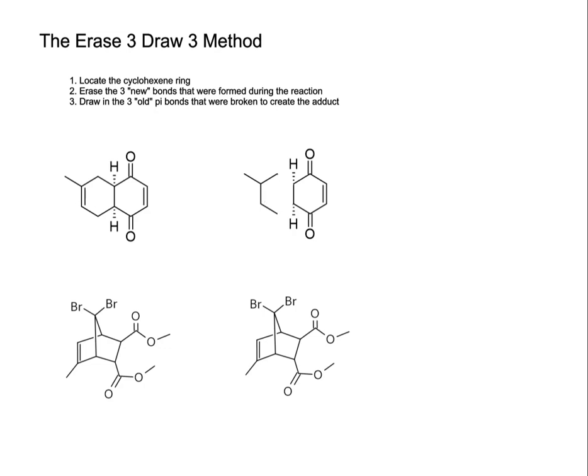Now we're going to draw in the three old pi bonds that were broken to create the adduct. Remember, we had a conjugated diene, so where we just erased one of the new pi bonds, adjacent to that is where we had the conjugated system. So those are the two bonds there to make the conjugated diene. Now directly opposite to where we erased the pi bond is where we had the double bond on the dienophile.